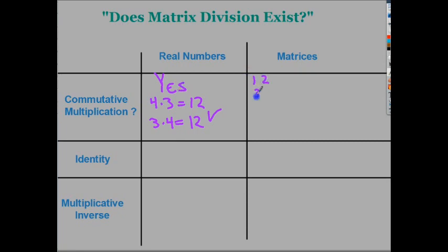When you work with matrices, it doesn't do that. If I have 1, 2, 3, 4, and I want to multiply it by 4, 3, 2, 1,